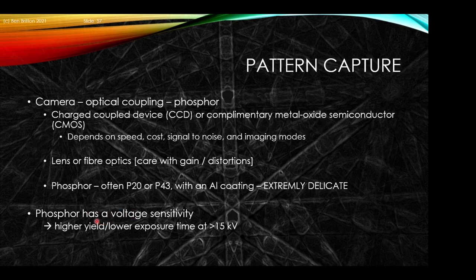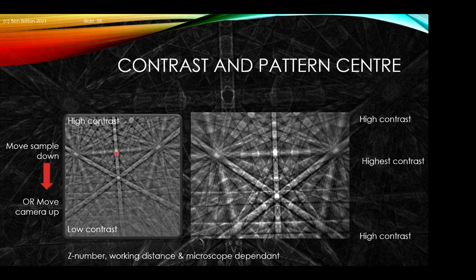The phosphor has some voltage sensitivity, with a higher yield of photons and lower required exposure times when you have greater than about 15 kiloelectron volts of incoming electrons. The pattern center is the shortest distance between the sample and the detector. A good pattern has good contrast at the bottom and top of the image with strong contrast, many visible bands, higher-order features, and sharpness towards both edges and center. If the pattern center is too high, contrast is lost and some unusual physics occurs. To correct this, move the sample down in the chamber or move the detector upward if possible. The specific contrast setup depends on the Z number, so if you change material systems you may need to change your recipe.